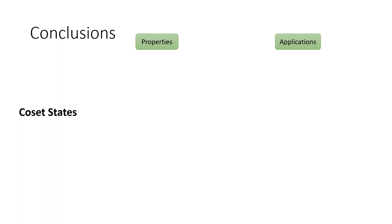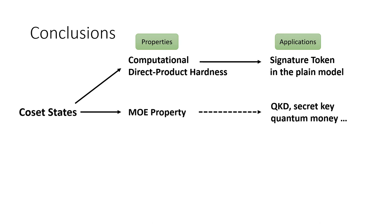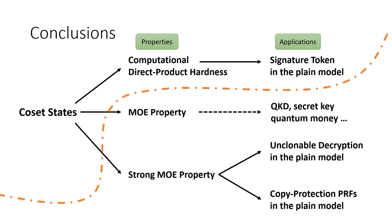Finally, we conclude the work. We first propose coset states and show they have computational direct product hardness, giving signature token schemes in the plain model. We next show coset states have monogamy of entanglement property, which would naturally give applications like quantum key distribution and secret-key quantum money. We conjecture coset states have strong monogamy of entanglement — later proved — giving unclonable decryption and copy protection of PRFs in the plain model. Note that although we achieve different primitives in the plain model, they require completely different structures of coset states, so we think they are conceptually very different ideas. That's the end of my talk. Thanks for listening.